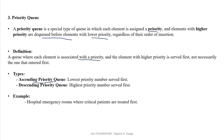Types देखो: ascending priority Queue and descending priority Queue। Ascending priority Queue में जो lowest priority होगी, वो पहले serve किया जाएगा — उसको पहले remove करेंगे। Descending priority Queue में जो higher priority elements हैं, वो पहले serve होंगे। Example: hospital emergency rooms, where critical patients are treated first। Hospital में जो critical patients होते हैं, उनको पहले treat किया जाता है। दो patients आये — एक को जुकाम हुआ है और दूसरे का accident हुआ है — तो जिसको accident हुआ है उसको priority है। So this is how priority Queue works।